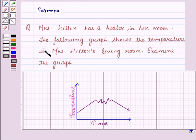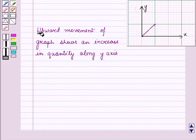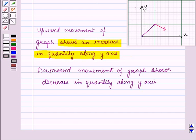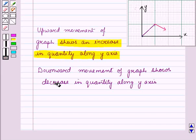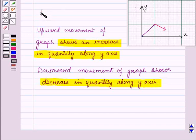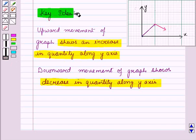Before starting the solution of this question, we should know some results. The first result is: upward movement of a graph shows an increase in quantity along the y-axis, and downward movement of a graph shows a decrease in quantity along the y-axis. These results will work as a key idea for solving the given question.